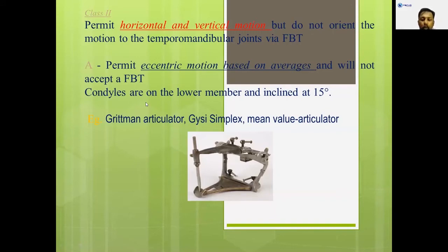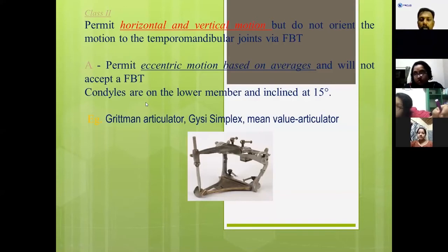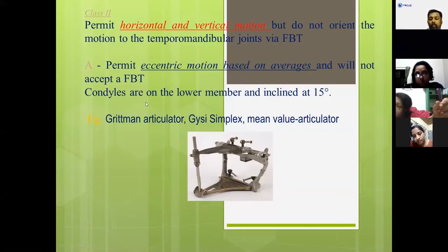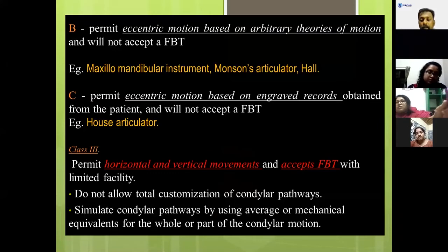Class two: both horizontal and vertical motions are possible. It is not able to accept a face-bow transfer. The perfect example is the mean value articulator.